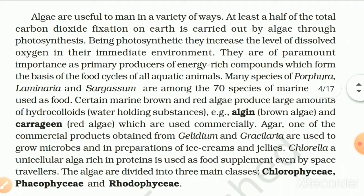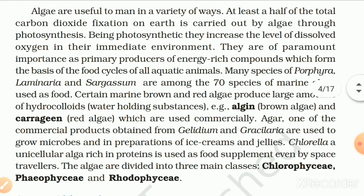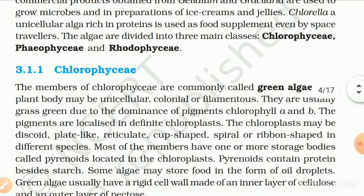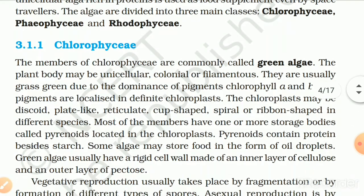Algae are useful to man in a variety of ways. At least half of the total carbon dioxide fixation on earth is carried out by algae through photosynthesis. Being photosynthetic, they increase the level of dissolved oxygen in their immediate environment. They are of paramount importance as primary producers of energy-rich compounds which form the basis of the food cycle of all aquatic animals. Many species of Porphyra, Laminaria and Sargassum are among the 70 species of marine algae used as food. Certain marine brown and red algae produce large amounts of hydrocolloids — water-holding substances — e.g. algin from brown algae and carrageen from red algae, which are used commercially. Agar, commercial products obtained from Gelidium and Gracilaria, are used to grow microbes and in the preparation of ice creams and jellies. Chlorella, a unicellular alga rich in protein, is used as a food supplement even by space travelers. The algae are divided into three main classes: Chlorophyceae, Phaeophyceae and Rhodophyceae.